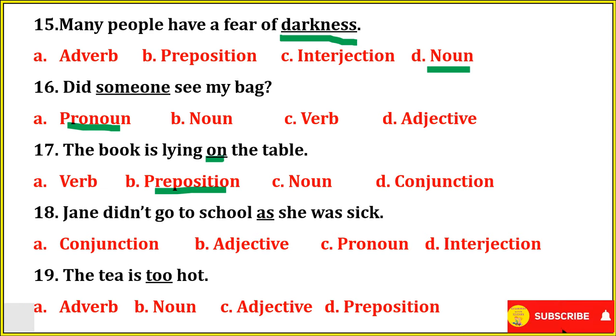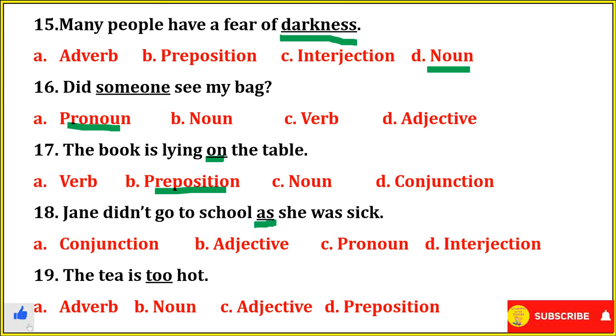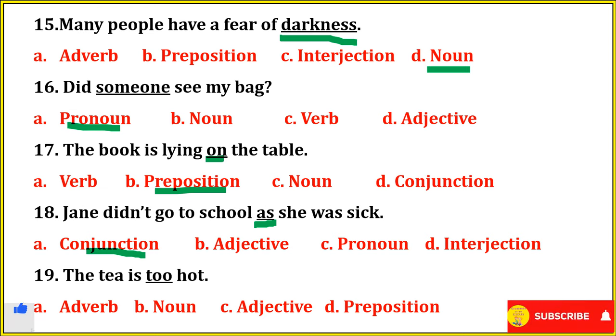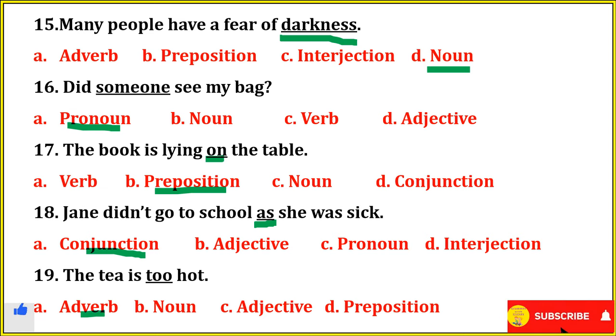Jane didn't go to school as she was sick — so 'as' here will be conjunction. The tea is too hot — so 'too' here will be adverb. Don't get confused with adjective — it will be adverb.